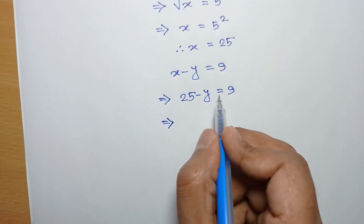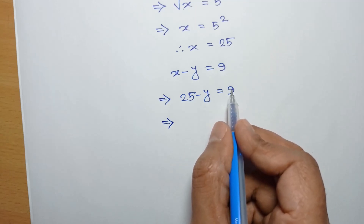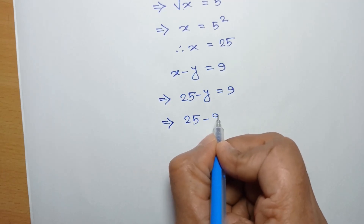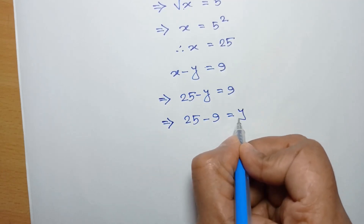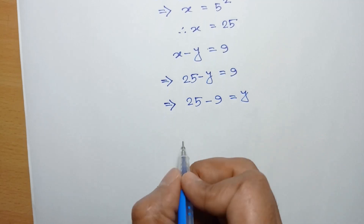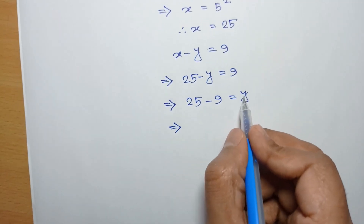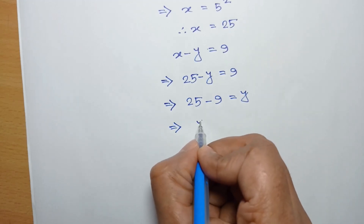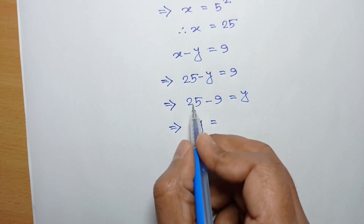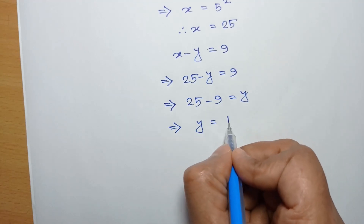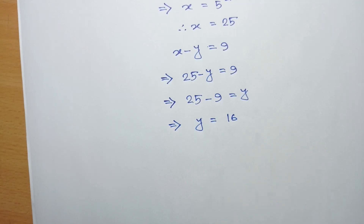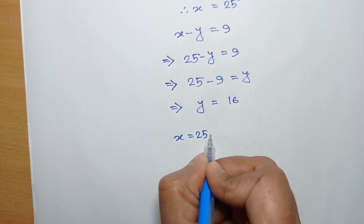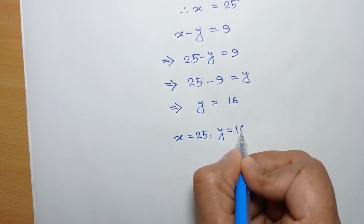Taking y to the right side and 9 to the left side, we can write 25 minus 9 is equal to y. Therefore y is equal to 25 minus 9, which is 16. So the value of x is 25 and y is 16.